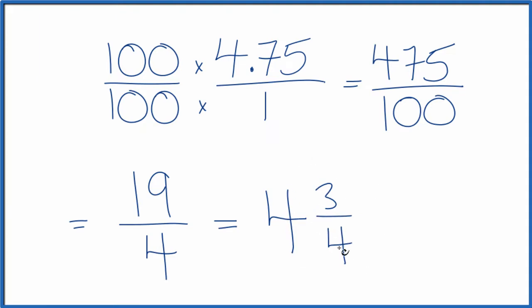You can check that. 4 times 4 is 16. 16 plus 3, that's 19. So 19 fourths, just like we had here.